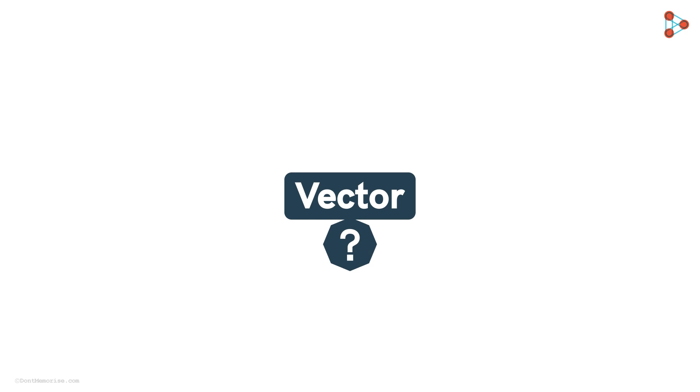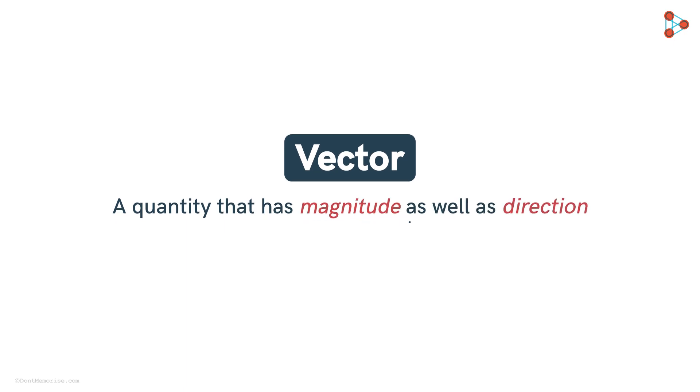What is a vector? That's right! Previously we had seen that a vector is a quantity that has magnitude as well as direction.